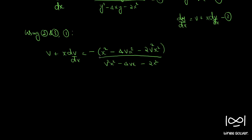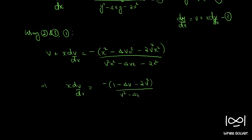Cancelling out x² throughout and rearranging, we get x·dv/dx = minus(1 - 4v - 2v²) divided by (v² - 4v - 2), minus v.